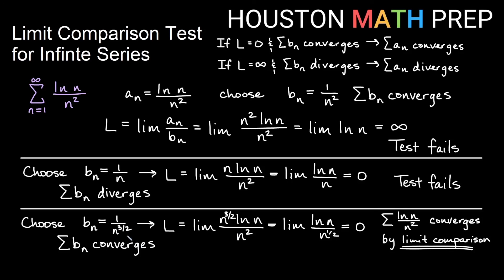It really only worked when I picked a very specific power of n. Once you try the test once or twice, you might decide this isn't the best test to figure out convergence or divergence for a particular series. Every now and then you'll get a series that's very picky about what you choose — go one way and it fails, go another way and it fails the other way, so you might need to choose something in the middle. That'll be up to you to decide whether to keep going with the limit comparison test or choose one of the other tests. Hopefully this gives you a good idea of how to use the limit comparison test for infinite series. Thanks for watching, everyone — we'll see you in the next video.